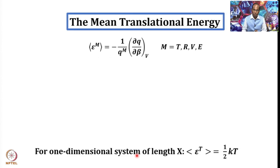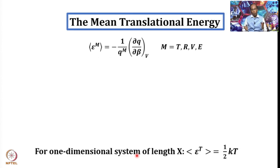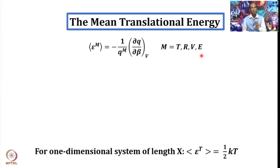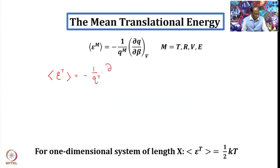Having established this, let us now compute mean energies for different modes one by one. We start with mean translational energy: epsilon-bar_trans = −(1/Q_trans)·(∂Q_trans/∂beta) at constant volume. Let us first consider Q_trans in one dimension, which equals X/lambda, where X is the length of the container and lambda is the thermal wavelength.